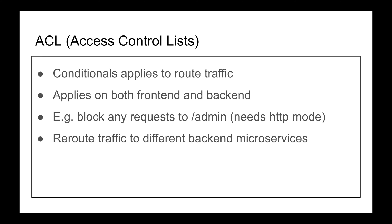ACLs can also be applied at Layer 4 mode. Even though you can't see the data, you can inspect the IP address. For example, users coming from Asia can be routed to backend servers in Singapore, and users coming from America can be routed to servers in North Virginia. It's really powerful.